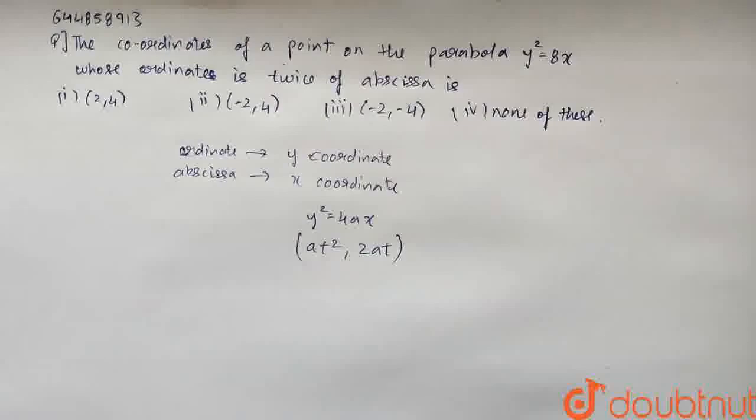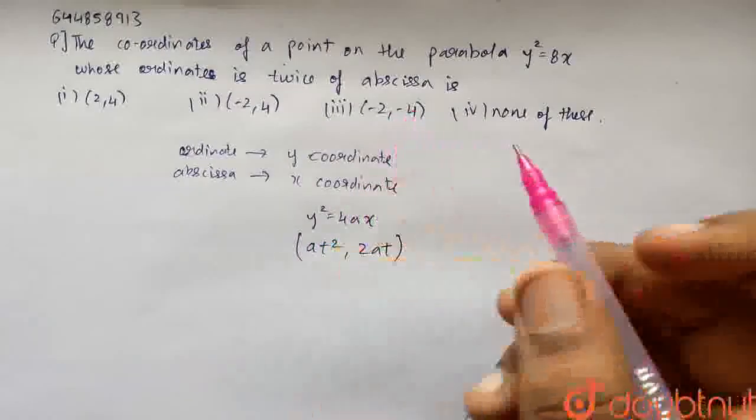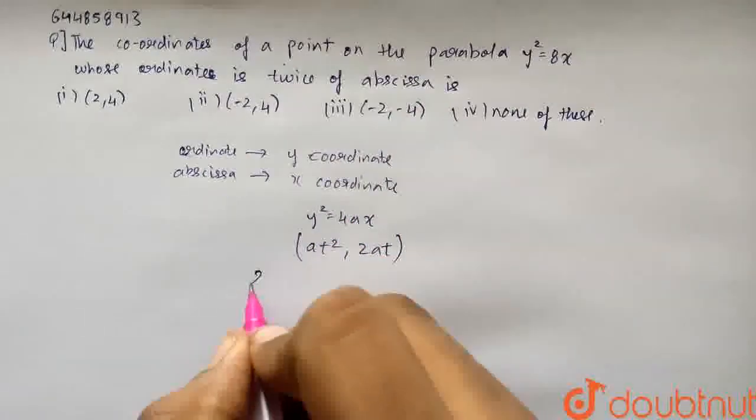We are given the y coordinate is twice of the abscissa. So 2at, that is the y coordinate which is the ordinate, equals twice of abscissa.